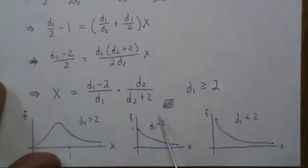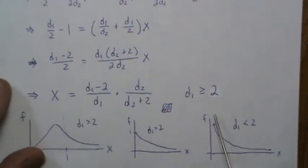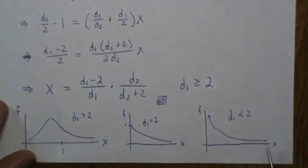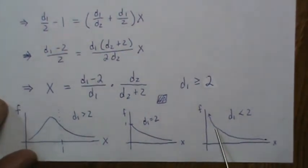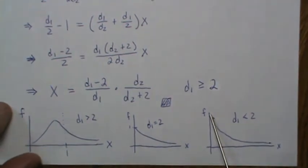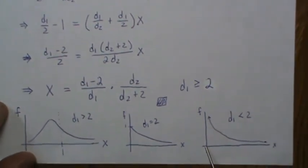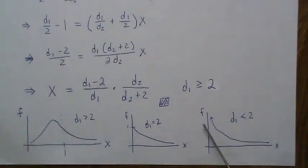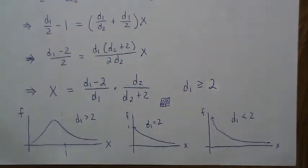When the numerator degrees of freedom is less than two, the F distribution looks like this, and this goes up forever, never touching zero. And so there is no mode. There's no biggest value.